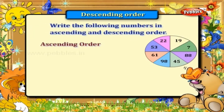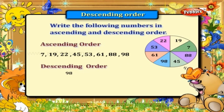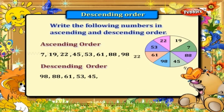The numbers in ascending order are: 7, 19, 22, 45, 53, 61, 88, and 98. The numbers in descending order are: 98, 88, 61, 53, 45, 22, 19, and 7.